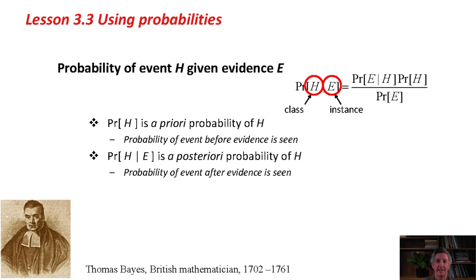P(H) by itself is called the a priori probability of the hypothesis H. That's the probability of the event before any evidence is seen. That's really the baseline probability of the event. For example, in the weather data, I think there are 9 yeses and 5 noes. The baseline probability of the hypothesis play equals yes is 9 over 14, and play equals no is 5 over 14.